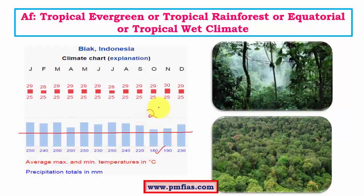Another chart is for a place called Biak in Indonesia. Here we can see a more equitable distribution of rainfall. Again, rainfall doesn't fall below 6 centimeters in any month. The average rainfall is above 25 centimeters per month; the least is about 18 centimeters. On a yearly scale, total rainfall would be around 250 centimeters. The overall range across regions is 150 to 300-350 centimeters.